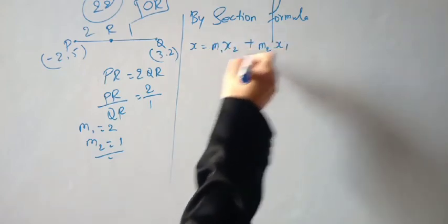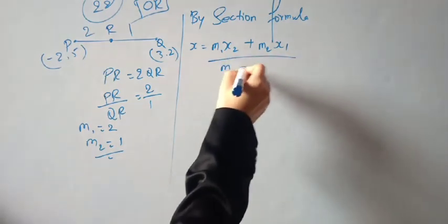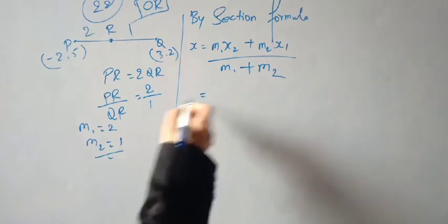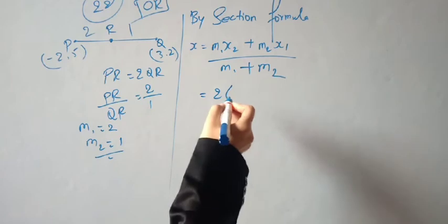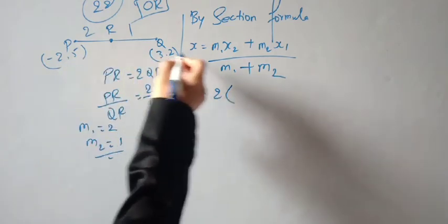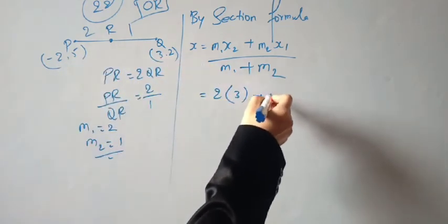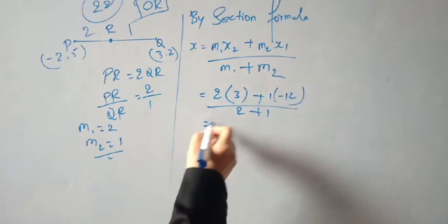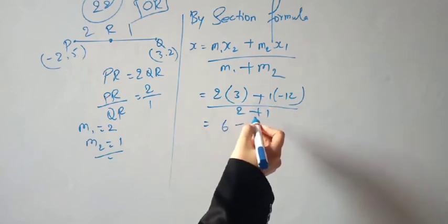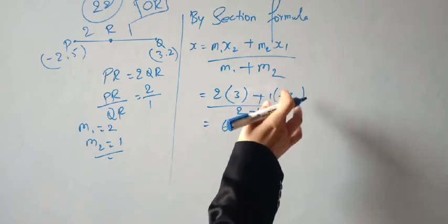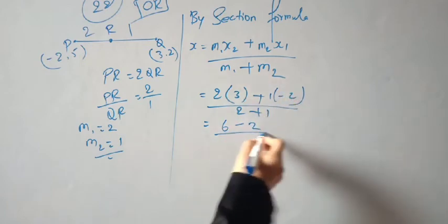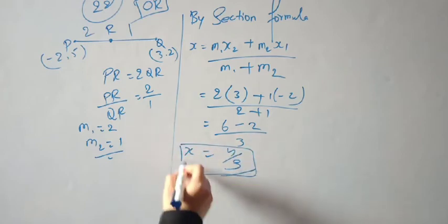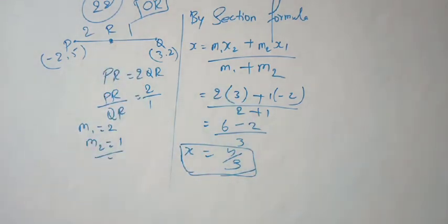Using the section formula: x = (m1·x2 + m2·x1) / (m1 + m2). Here m1 = 2, x2 = 3 (from Q), x1 = -2 (from P). So x = (2×3 + 1×(-2)) / (2 + 1) = (6 - 2) / 3 = 4/3. Now find the y-coordinate.